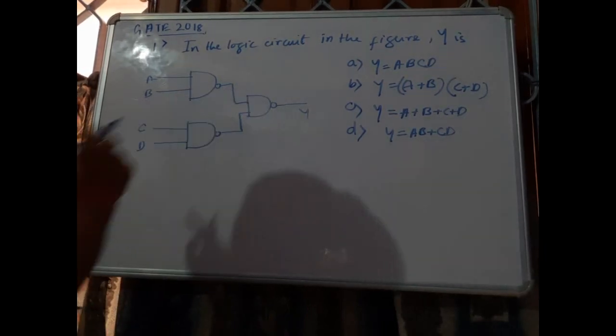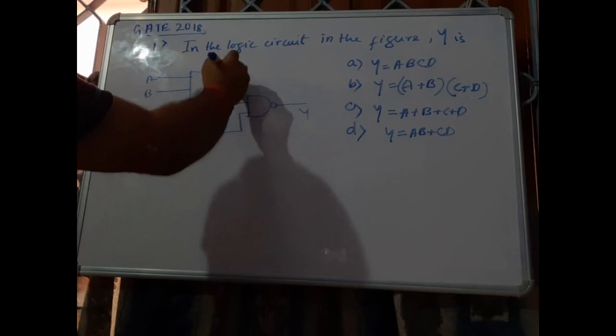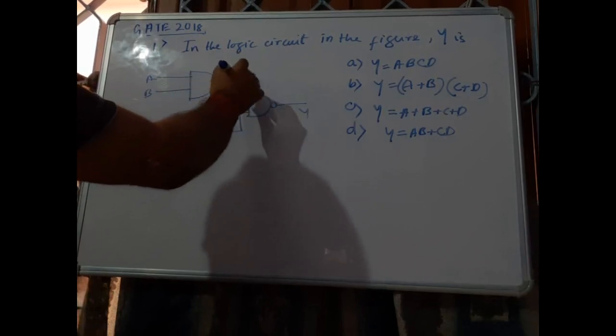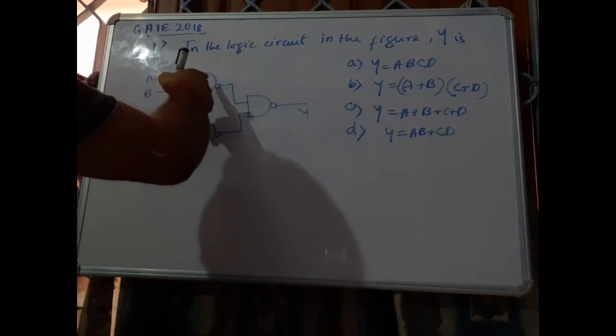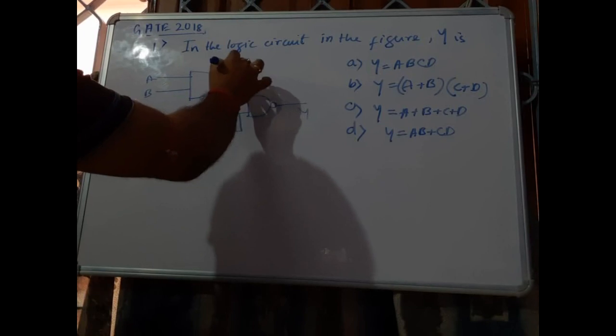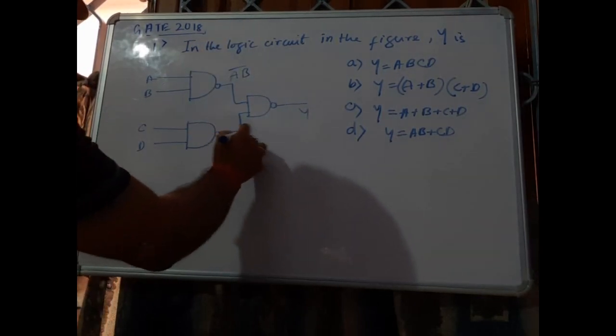Now these are all NAND gates. So this is the input a b, so the output of this NAND gate is a b bar, right? And this output will be c d bar, right?